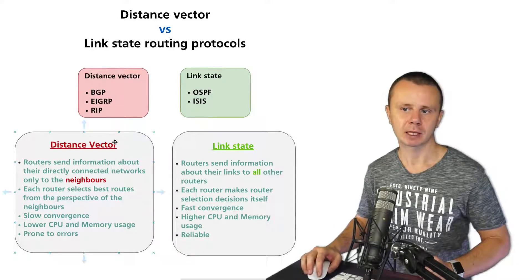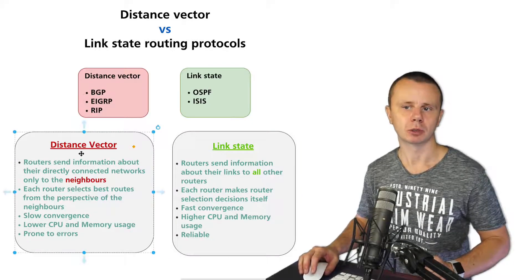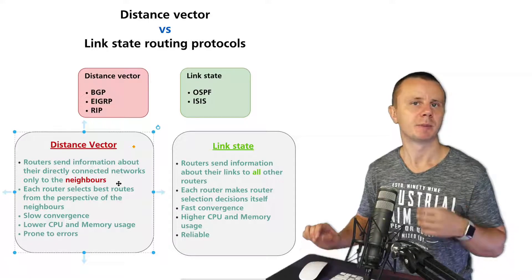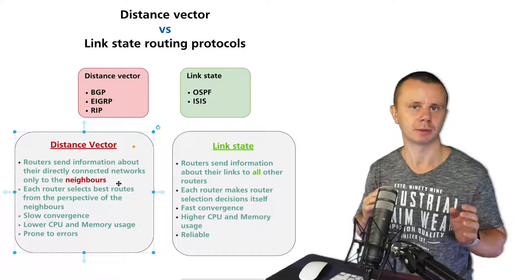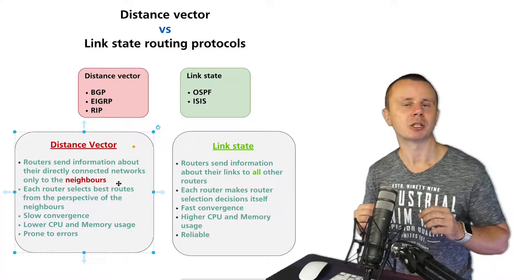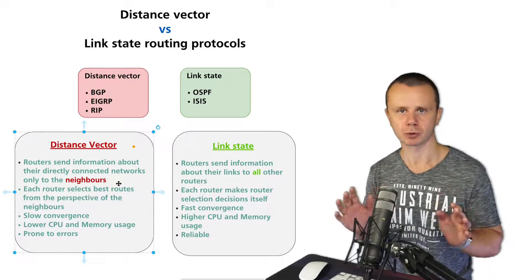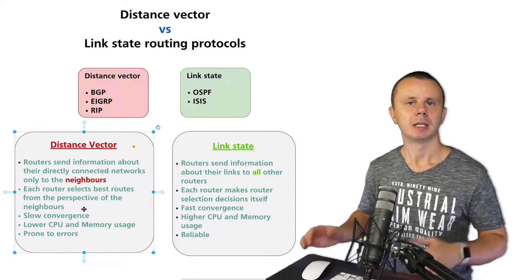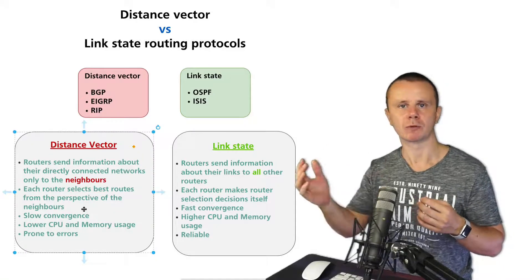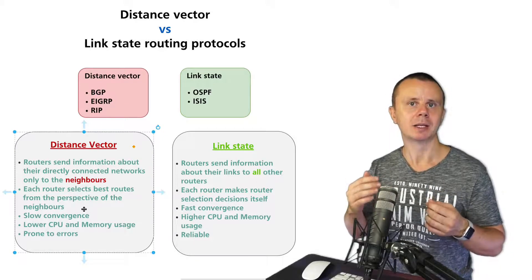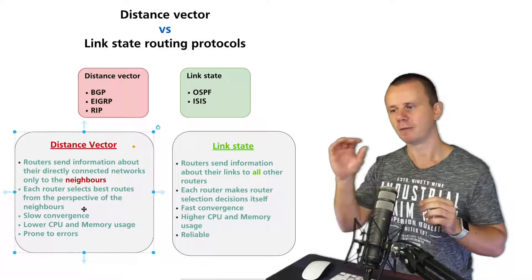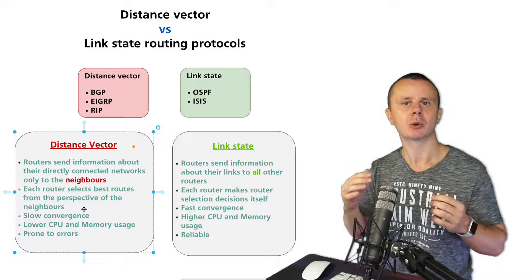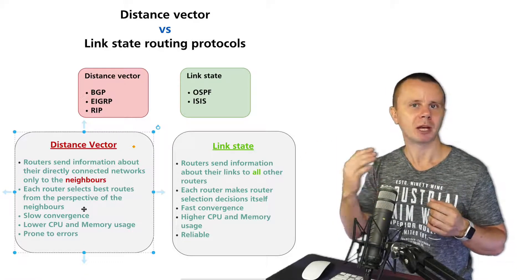In distance vector routing protocols, routers send information about their directly connected networks only to their neighbors. For example, if a router has three directly connected neighbors, it sends information only to those three routers. Next, every router selects best routes from the perspective of its neighbor — when it receives information about a remote network from a neighbor, it simply trusts that information and knows the network is accessible via that neighbor, similar to trusting a road sign.